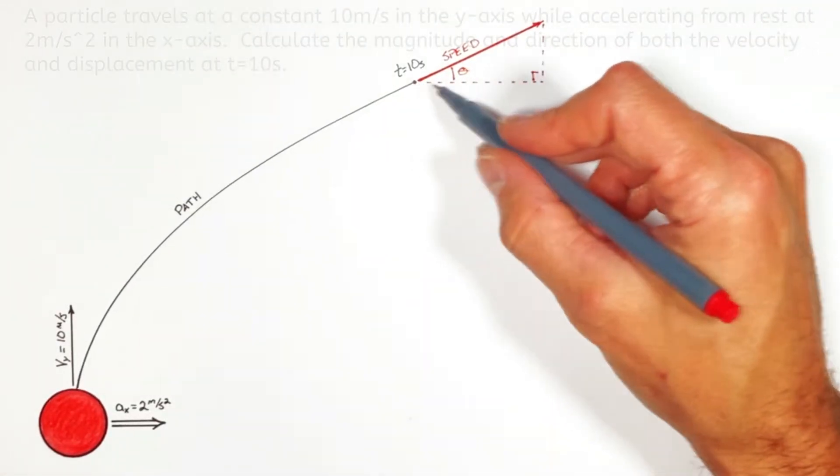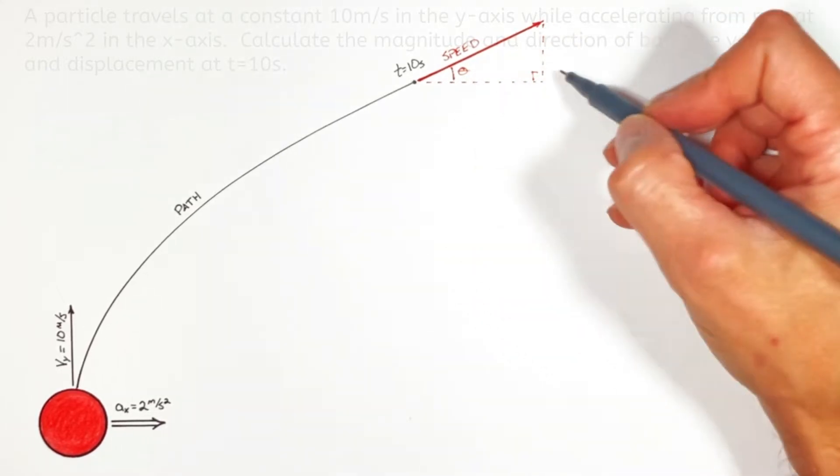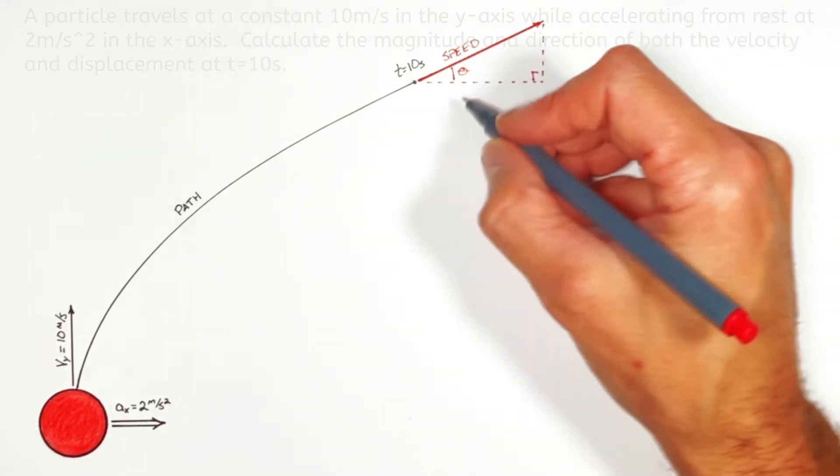And this is nothing other than a right triangle where the speed is the hypotenuse of the triangle and the two sides are made up of the x and y components of the velocity.